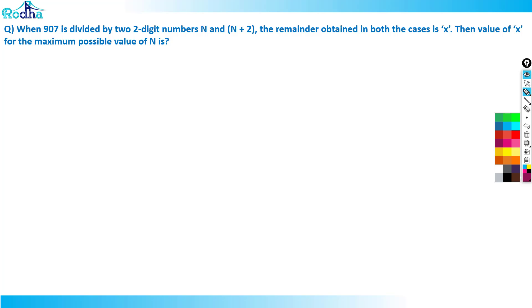Very nice question — look at this, guys. When 907 is divided by two 2-digit numbers n and n plus 2, the remainder obtained in both cases is x. Given that, the question asks: what is the value of x for the maximum possible value of n?